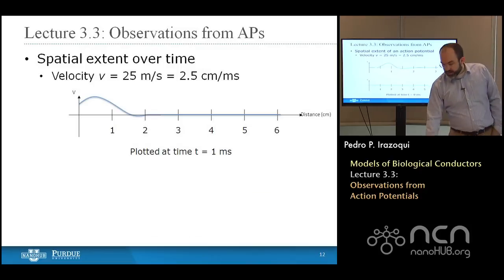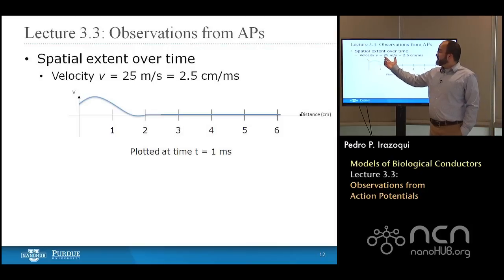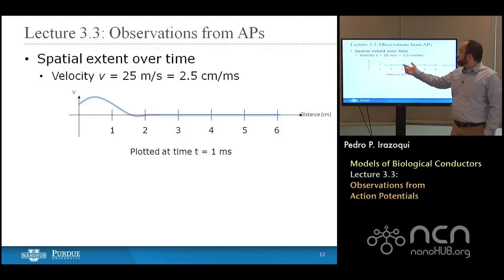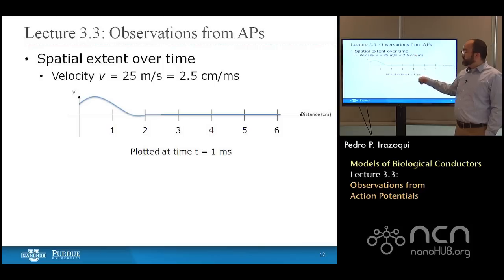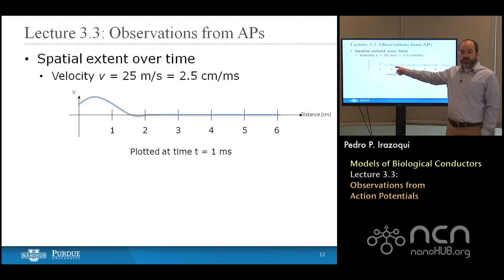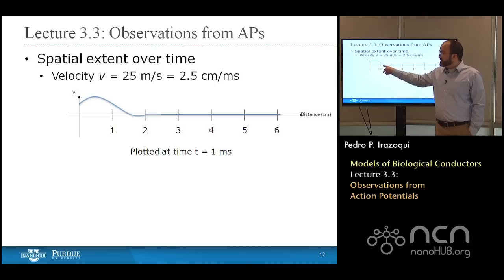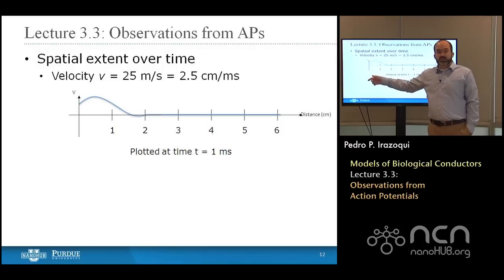After one millisecond, with an action potential traveling at 25 meters per second — which is 2.5 centimeters per millisecond — you've traveled 2.5 centimeters. That means 2.5 centimeters out, the action potential is just about to begin. Closer to the axon hillock, the action potential has already begun and some of it has transpired. As you move towards the axon hillock, you see the shape of the action potential reproduced as a mirror image of what you see in the time domain.